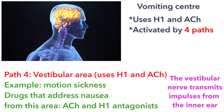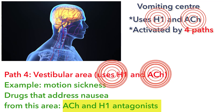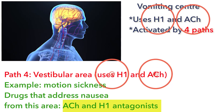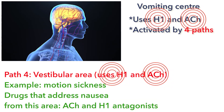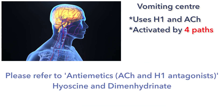Another area that can send messages to the vomiting center in the medulla is the vestibular area. An example of a condition that originates in the vestibular area and can prompt nausea and vomiting is motion sickness. The neurotransmitters involved in motion sickness are histamine-1 and acetylcholine. So the best medications for motion sickness are usually the histamine-1 antagonists — antihistamines — and the acetylcholine antagonists.